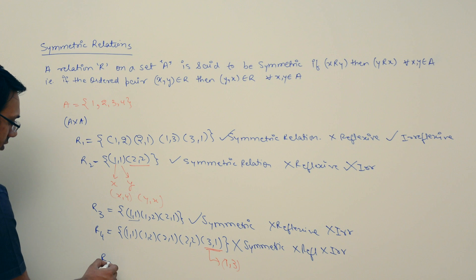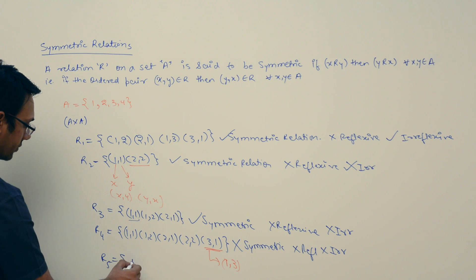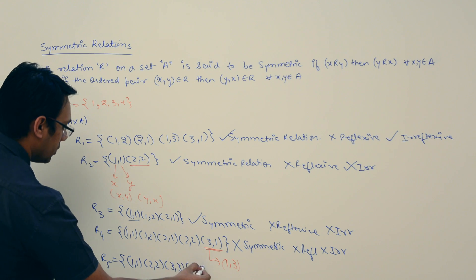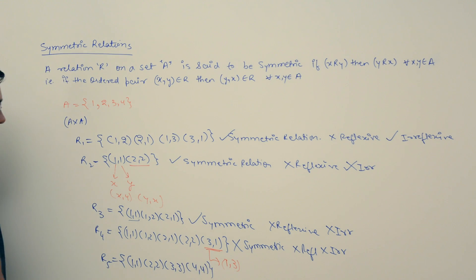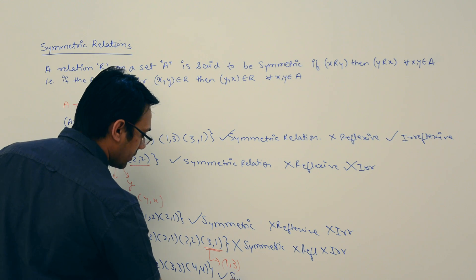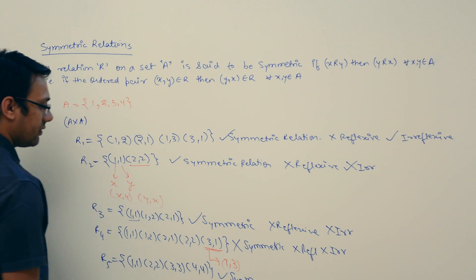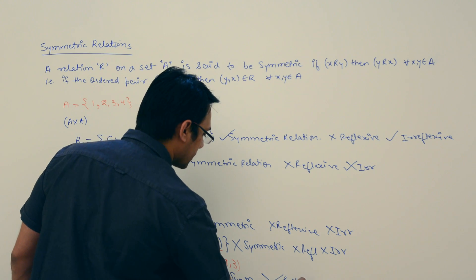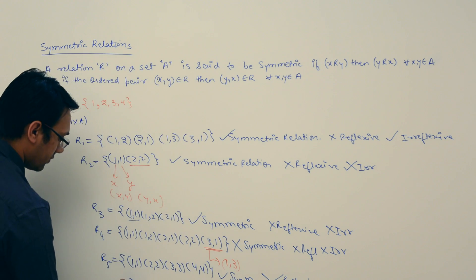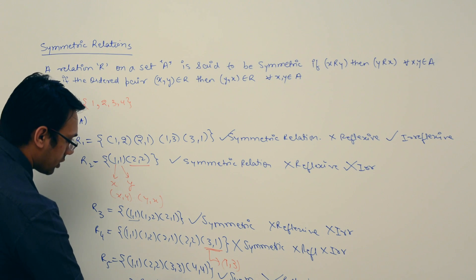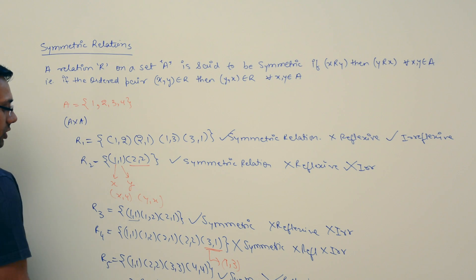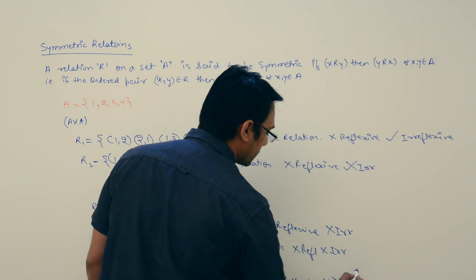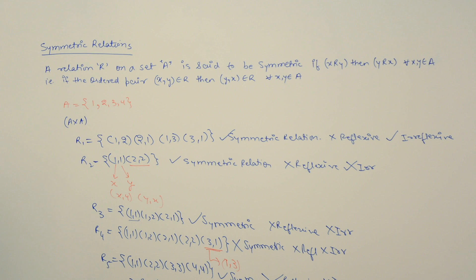If I take one more relation R5 which has {(1,1), (2,2), (3,3), (4,4)}, then this relation R5 is symmetric. It is reflexive because it has all the ordered pairs where x is related to x for all x belonging to set A. And this relation is not irreflexive.